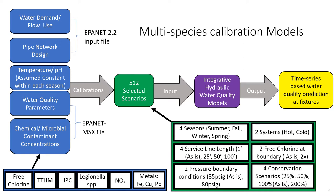After the calibration process, 512 scenarios were selected because they were the most representative for a residential plumbing system. These scenarios include four seasons, two systems, four service line lengths, two free chlorine conditions at the boundary (either the service line or the hot water heater depending on the system), two pressure boundary conditions, and four conservation scenarios. This created the integrative hydraulic water quality models, with output as a time-series-based water quality prediction at the fixtures.